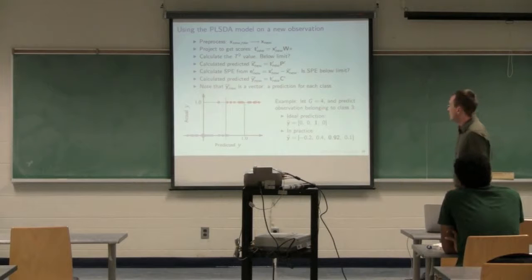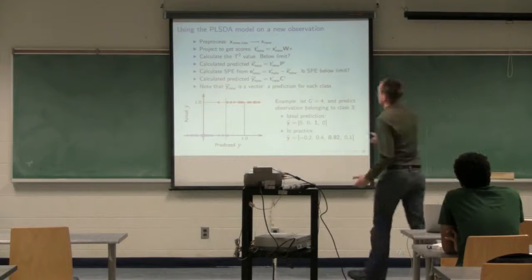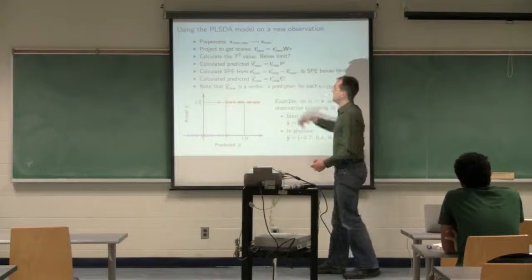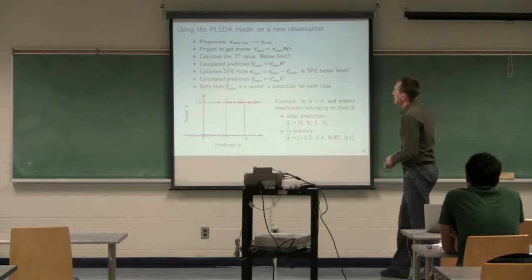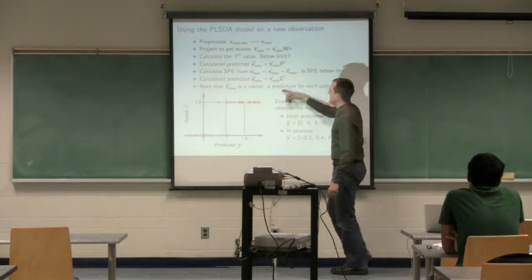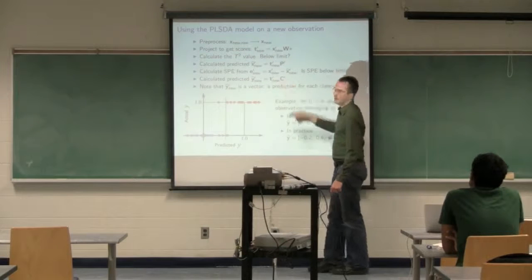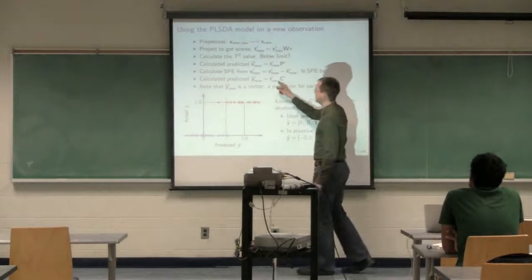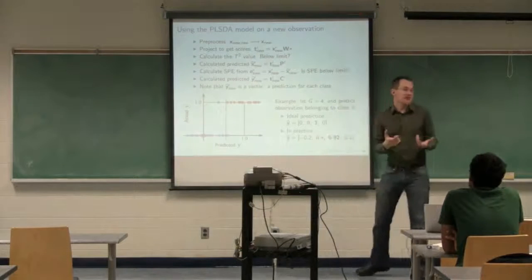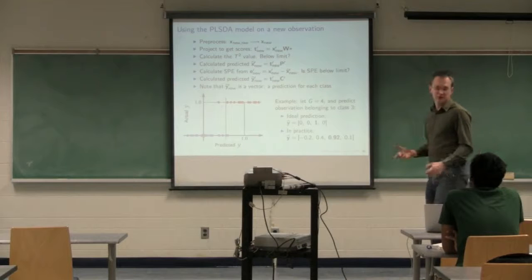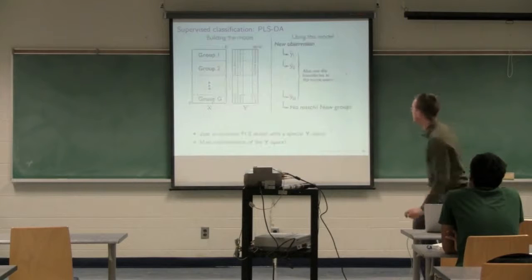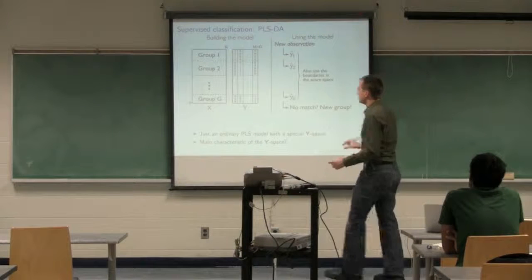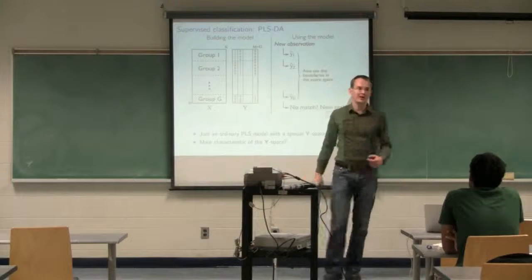When we use the model, we use it like an ordinary PLS model. We take new X data, project it onto the W* weights to calculate the scores, get the T² value from the scores, get X-hat from multiplying T by P, and get the SPE value from the residuals. Once we have the scores, we multiply by the weights from the Y space to get Ŷ. That Ŷ vector contains as many entries as there are classes.